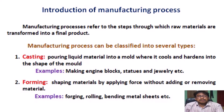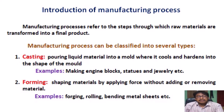Manufacturing process can be classified into several types. One: Casting — pouring liquid material into a mold where it cools and hardens into the shape of the mold. Casting is a manufacturing process in which a liquid material is usually poured into a mold, which contains a hollow cavity of the desired shape, and then allowed to solidify.